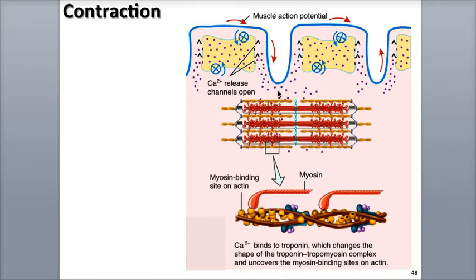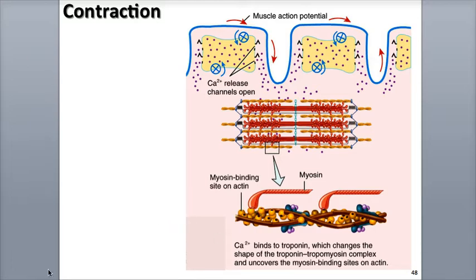In this period, the calcium ions released from the sarcoplasm bind to troponin, tropomyosin swivels away from the actin, exposing the myosin binding sites, and cross bridges form between the binding sites and the myosin heads of the thick filaments, allowing the power stroke to occur.